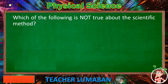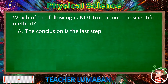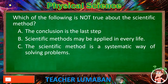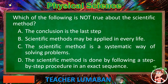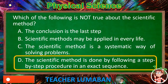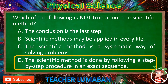Which of the following is not true about the scientific method? Letter A: The conclusion is the last step. Letter B: Scientific methods may be applied in everyday life. Letter C: The scientific method is a systematic way of solving problems. Letter D: The scientific method is done by following a step-by-step procedure in an exact sequence. The correct answer is letter D — the scientific method is done by following a step-by-step procedure in an exact sequence.